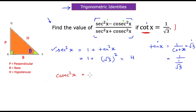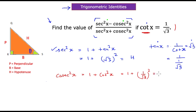Next, we calculate cosec²x. Using the standard identity, cosec²x = 1 + cot²x. We know cot x = 1/√3, so cosec²x = 1 + (1/√3)² = 1 + 1/3 = 4/3.